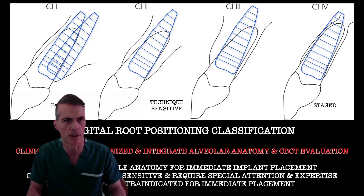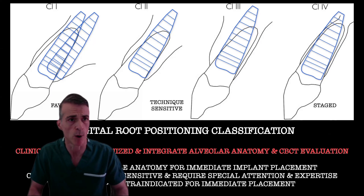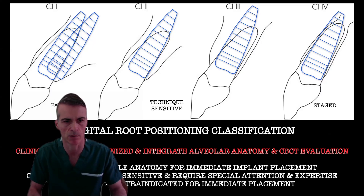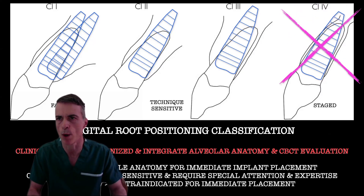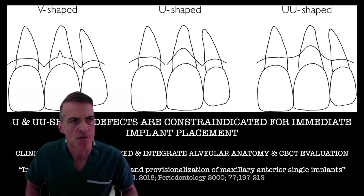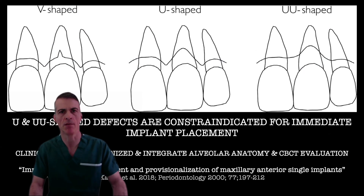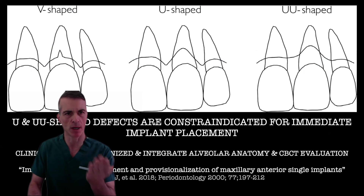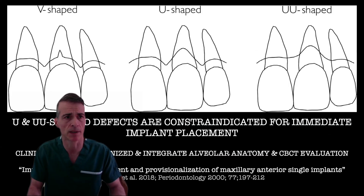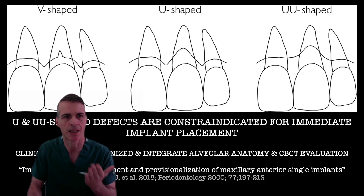It has to do with the amount of alveolar bone that we have — enough thickness both palatal and buccal — and a staged approach should definitely be the way to go in those cases. When it comes to 3D positioning, another important aspect is the bucco-lingual. The two main aspects you need to be looking for are the depth of the implant placement — the apico-coronal — and the bucco-lingual.